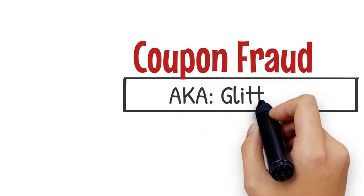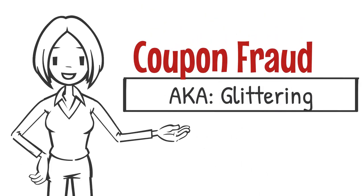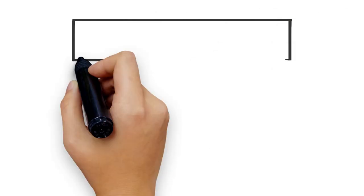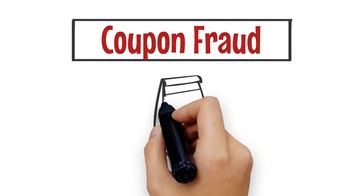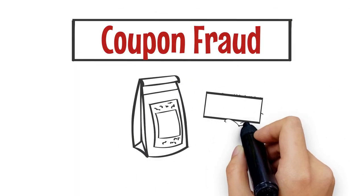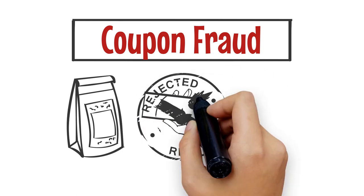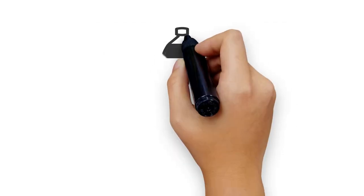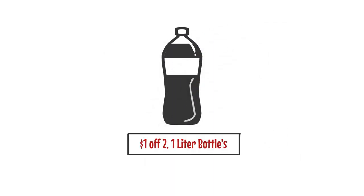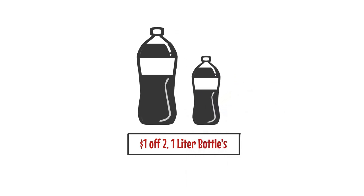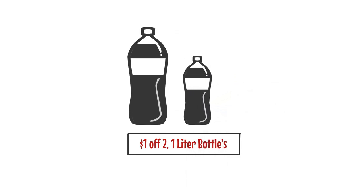Hey everyone, today I want to talk about coupon fraud, also known as glittering. Coupon fraud happens when a product does not match the coupon. For example, say we have a liter of soda and a coupon that states one dollar off two one-liter bottles of soda. Glittering comes into effect when the coupon is used for a smaller size bottle.